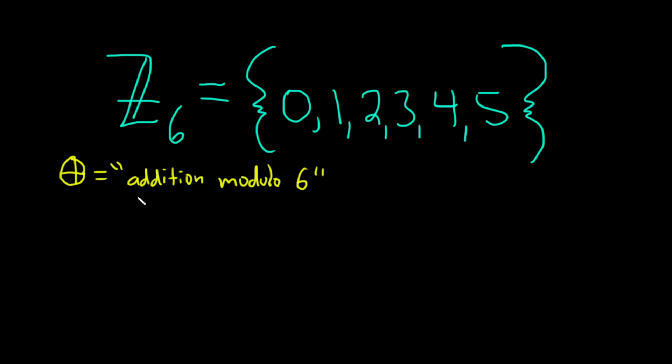So let's say you do 3 plus 4, so 3 circle plus 4, well that's going to be 7, right? But 7 is the same thing, what is 7? Well in this group, 7 is the same thing as 1. That's basically because 6 goes into 7 one time and the remainder is 1.